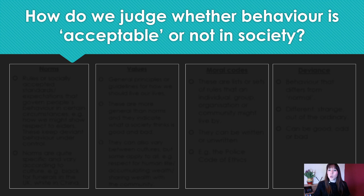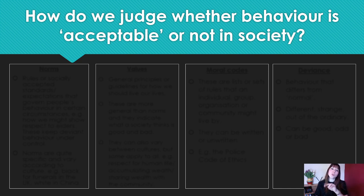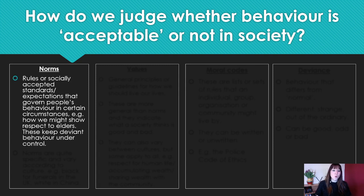How do we judge whether behaviour is acceptable or not in society? There are four different ways that we judge whether something is acceptable or not, and you need to write all four of these down. The first are norms. Norms are socially accepted standards and expectations that govern people's behaviour in certain circumstances — for example, how you might show respect to elders. These keep deviant behaviour under control. It's basically what is and is not expected by society.